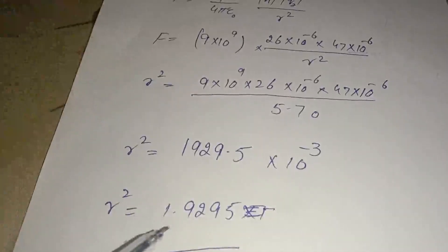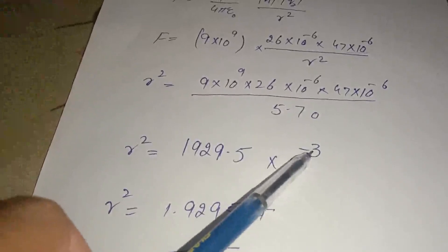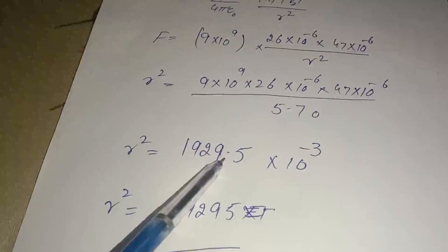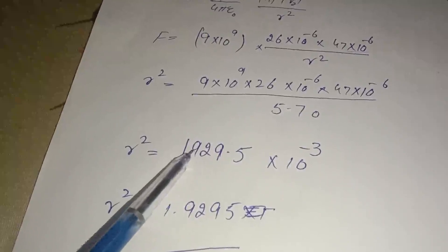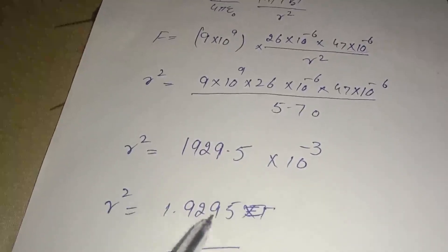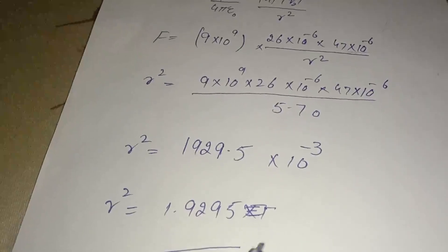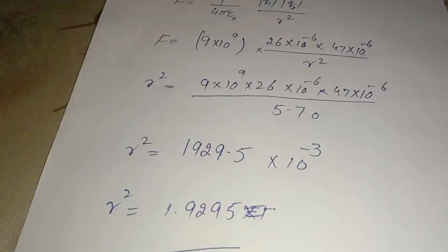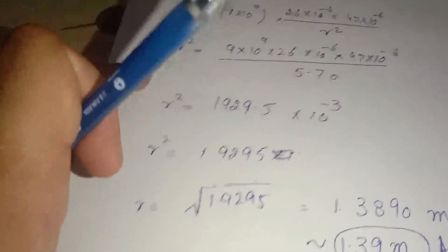In standard form, it can be written as 1.9295, because when we remove 10^-3, we move the decimal point three digits, so it becomes 1.9295 r². We have to find r. r is the square root of this, so the square root comes out to be 1.3890, which can be rounded off to 1.39 meters.